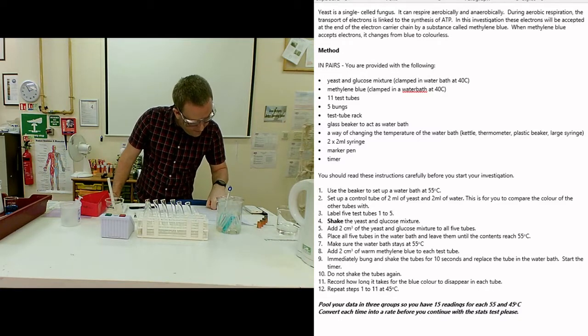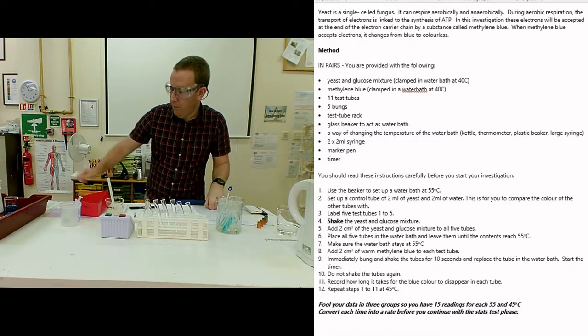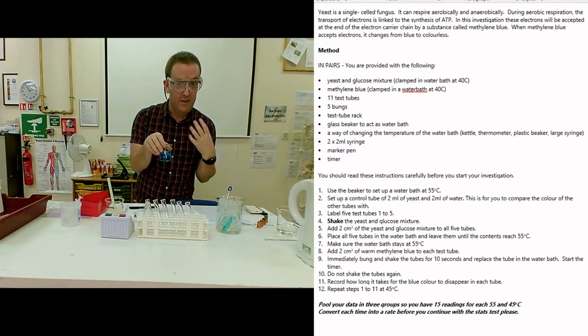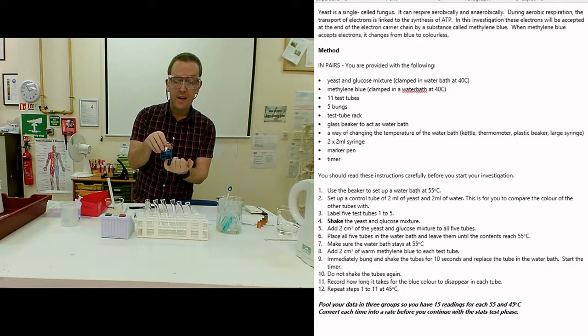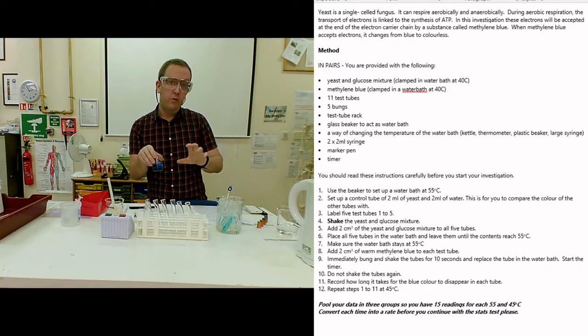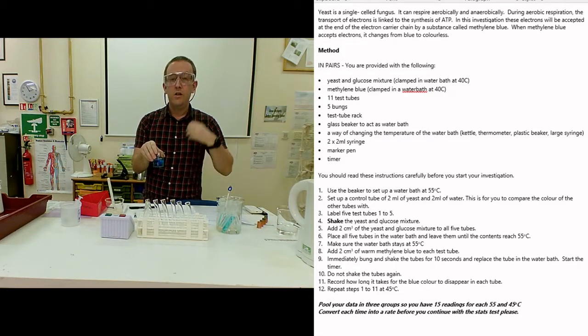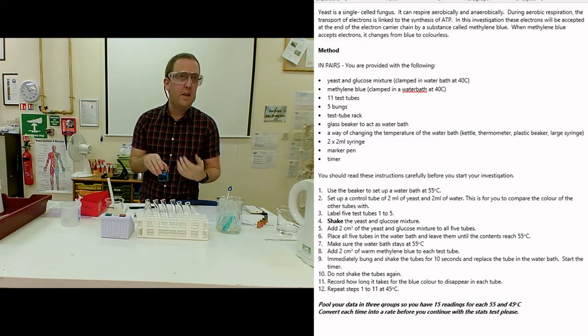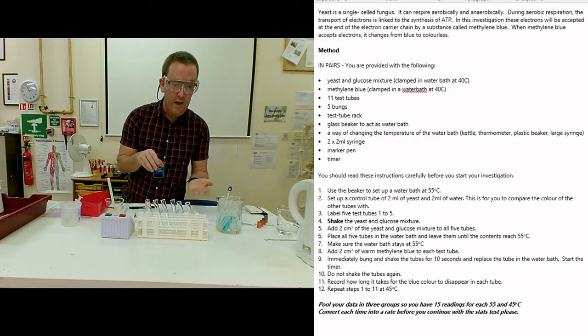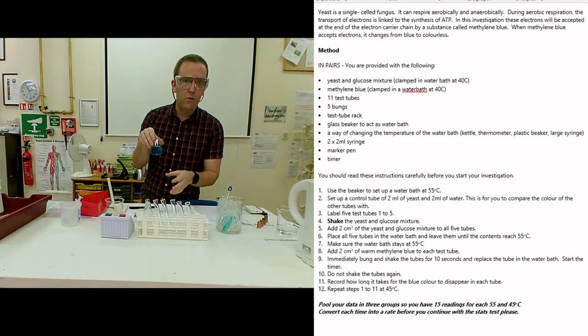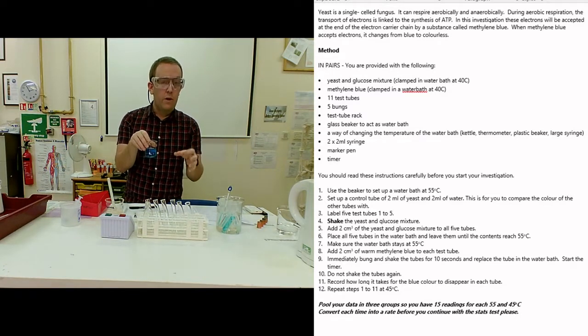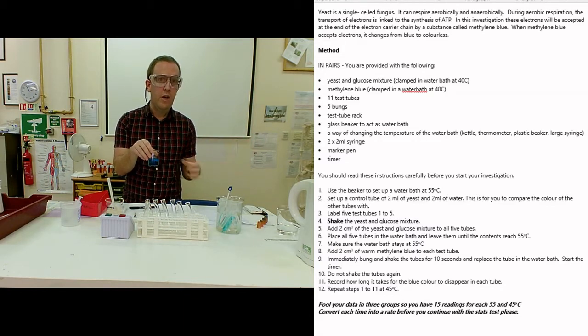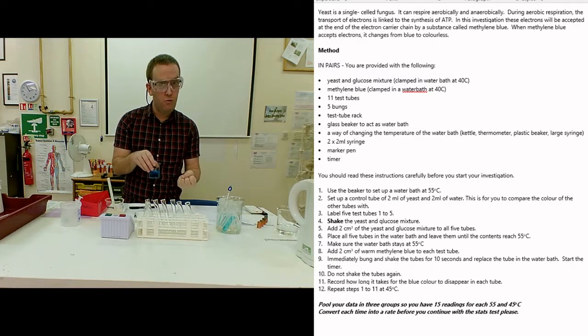Next, we need to pre-warm the methylene blue. This looks a lot weaker than the stuff you would have used as a stain for microscope work, and that's because it is. Obviously, one of the variables here is the concentration of the stain - too high concentration and you won't produce enough electrons to get it to decolorize in anything like a reasonable amount of time. This has been diluted. If any technical or teaching staff are watching, we've found that half the recommended concentration, even on the method sheets for this practical, is what gets you the best, most reasonable, most measurable results.